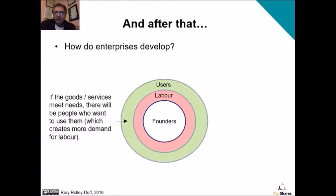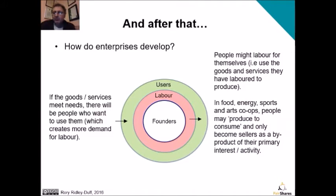As soon as you've got goods and services that meet people's needs, you'll find that people want to use them, maybe buy them, creating more demand for labour. But sometimes people may labour for themselves — they produce goods and services and consume them. In a food co-op, you might grow food and then use that food. If you put solar panels on your roof, either individually or as a collective, you'll probably want to use the energy you produce and just sell what you don't need to the market.